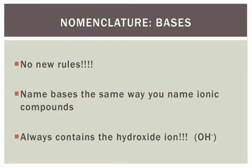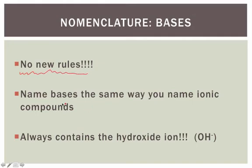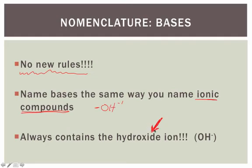When naming bases, the great news is that we have no new rules to talk about. When you name bases, it's the same exact rules we use for naming ionic compounds. The only catch is that your negative ion is always going to be that OH ion with the charge of negative one. Unlike the acids, this one is super easy — it's simply a matter of using the ionic rules that you've hopefully already learned.